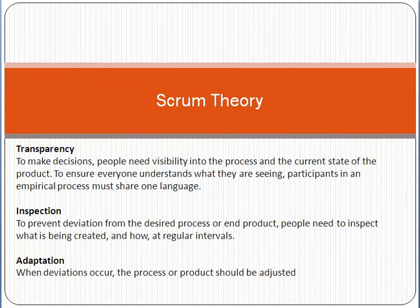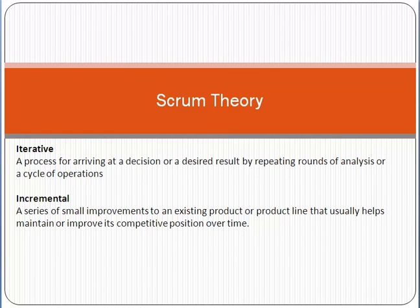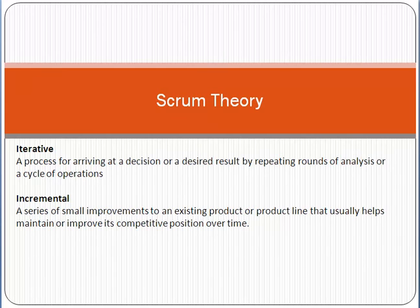The next important concept is the iterative approach. Iterative means a process for arriving at a decision or desired result by repeating rounds of analysis. Scrum uses the iterative sprint approach — with each iteration, things become better and improve. Incremental approach means a series of small improvements to an existing product that maintain or improve its competitive position over time. Each time we increment or improve something — the process, the demo, the product — things become more mature, stronger, and better.